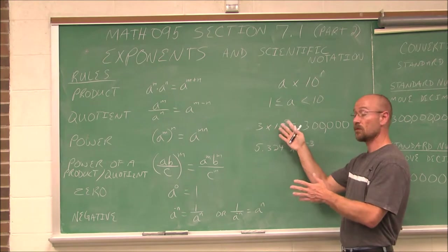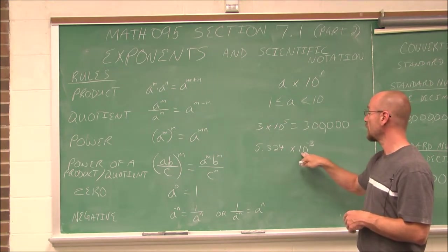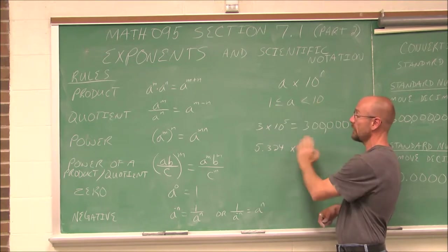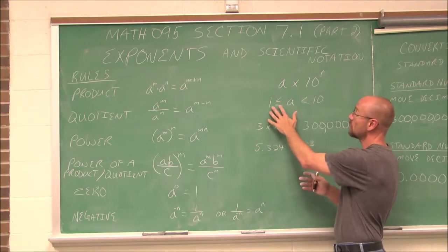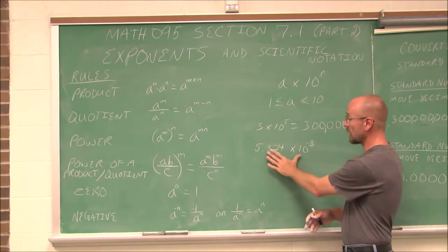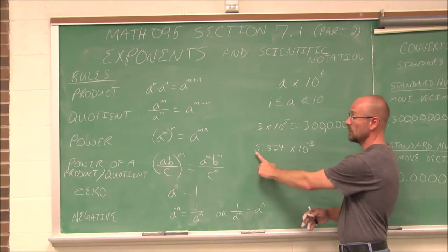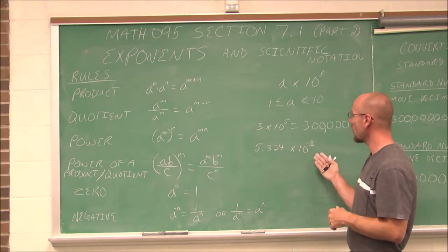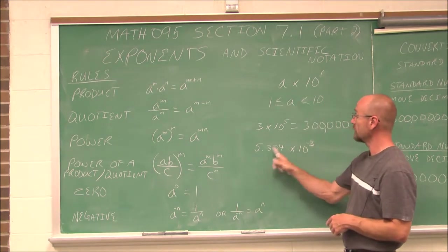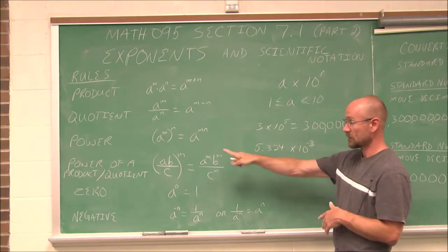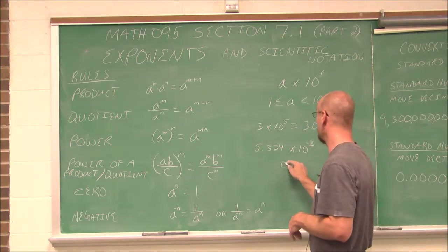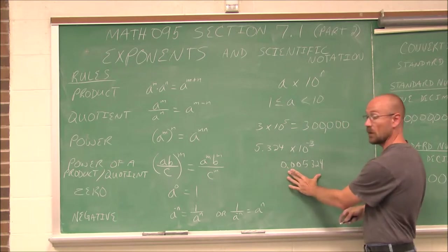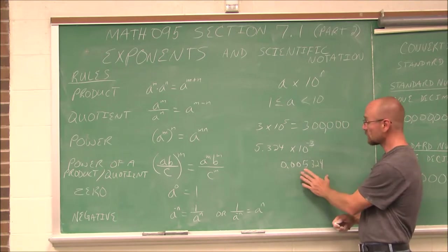Here we have 5.324 times 10 to the negative third. Even though it has a decimal, it is still between 1 and 10. There can only be one non-zero digit in front of the decimal. Written in standard form, a negative exponent tells us this is a small number — we move the decimal three spots to the left, giving a very small number whose first non-zero digit is in the thousandths place.